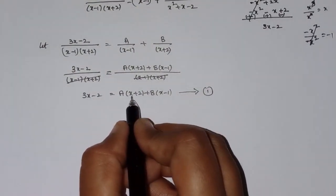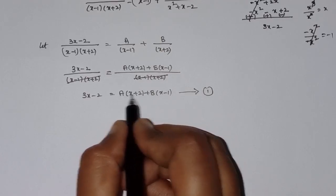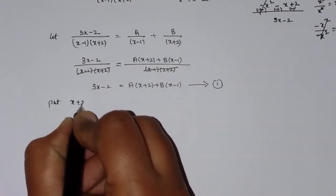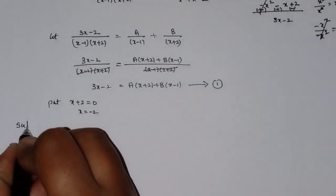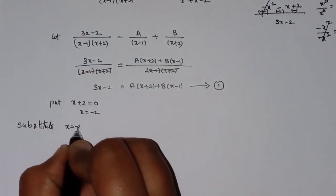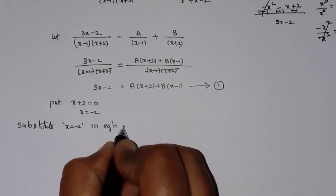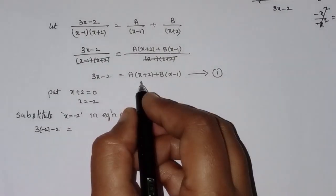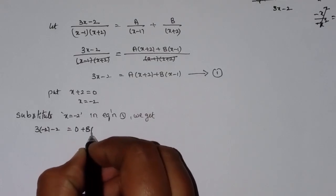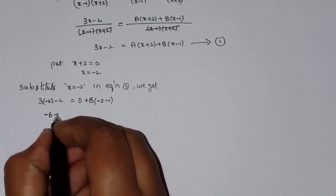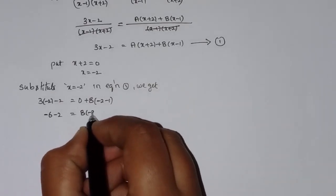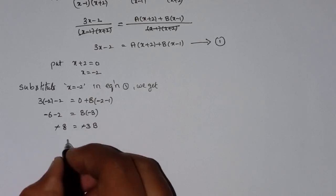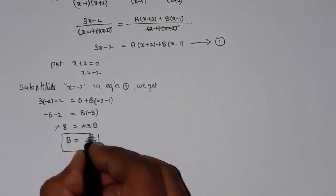To find B, put x plus 2 equal to 0, so x equals minus 2. Substitute x equals minus 2 into Equation 1: 3 into minus 2 minus 2 equals A into 0 plus B into minus 2 minus 1. That gives minus 8 equals B into minus 3, so minus 8 equals minus 3b. Cancelling the negatives, b equals 8 by 3.